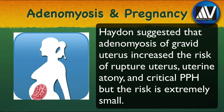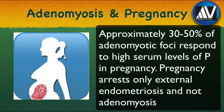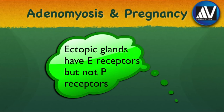Hayden suggested that adenomyosis of the gravid uterus increases the risk of uterine rupture, uterine atony, and critical postpartum hemorrhage, but the risk is extremely small. Approximately 30–50% of adenomyotic foci respond to high serum levels of progesterone in pregnancy. However, it must be noted that pregnancy arrests only external endometriosis and not adenomyosis. This is probably because ectopic glands have estrogen receptors but not progesterone receptors.